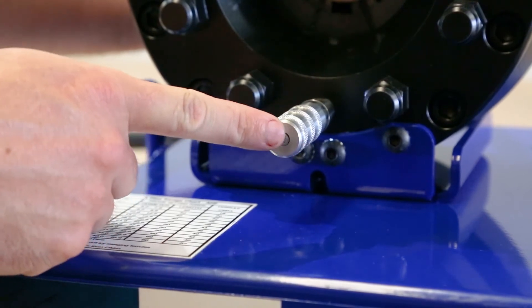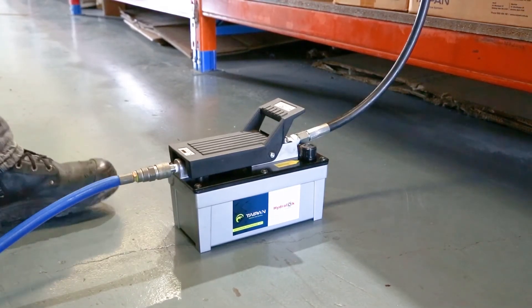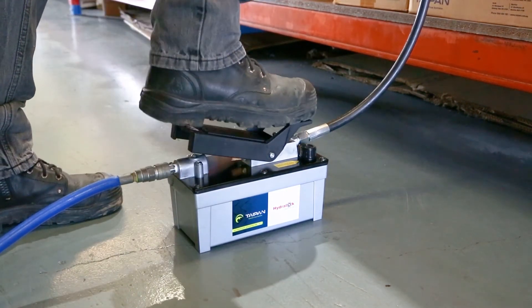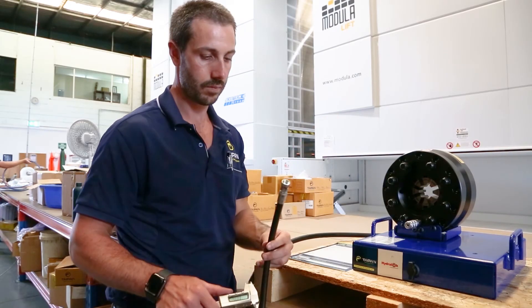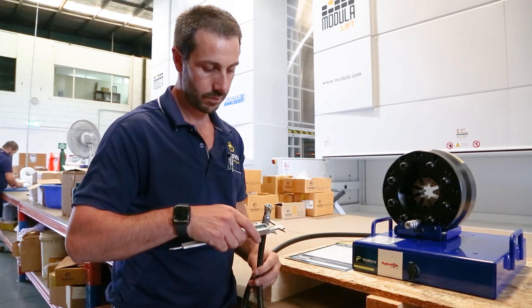Once the dial vernier and dial indicator are flush, release pressure by pushing lever forward on the foot pump. Check to ensure the crimp diameter meets the crimp specification.